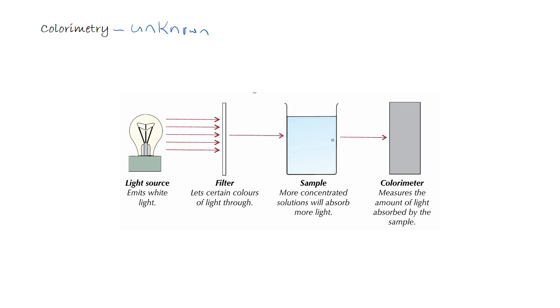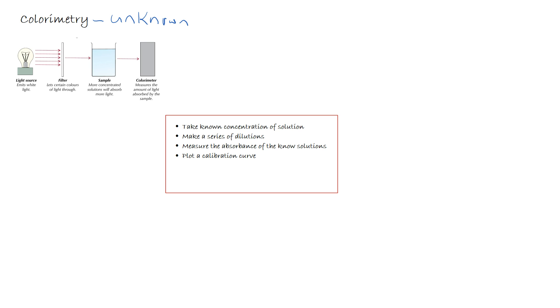Now this importantly has to be done in conjunction with something called a calibration curve. So we have to first of all calibrate the equipment before we can take any readings. So in order to do this experiment what we do is we take a known concentration of solution. We make a series of dilutions. For each of those dilutions we take a measurement using our calorimeter. We measure the absorbance of the known solution. And then we plot a calibration curve. And actually what I should have said in the middle of this, before taking any absorbance measurement we would always zero the calorimeter with distilled water as a reference.